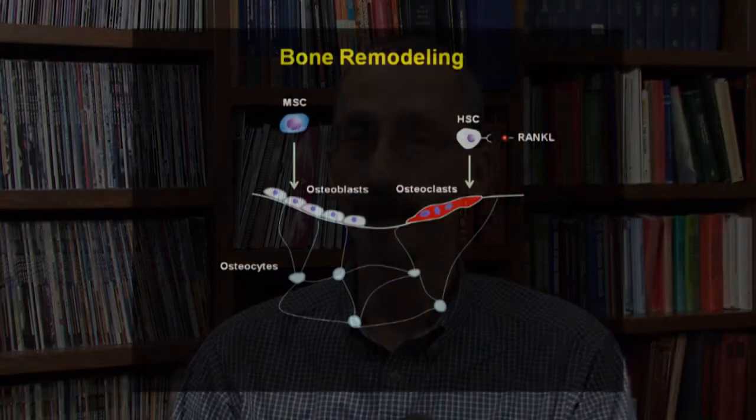The process of bone remodeling, this bone renewal process, is accomplished by teams of cells working together. There are two really important cell types in the team. The osteoclast, which is a large multinucleated cell at the head of the team, is the bone resorbing cell. They excavate bone by secreting acid and proteases that dissolve existing bone matrix, usually old bone matrix. And they're followed in space and time by the bone forming cells known as the osteoblasts.